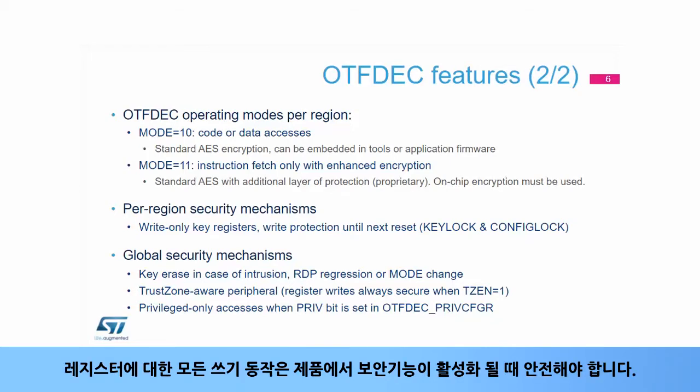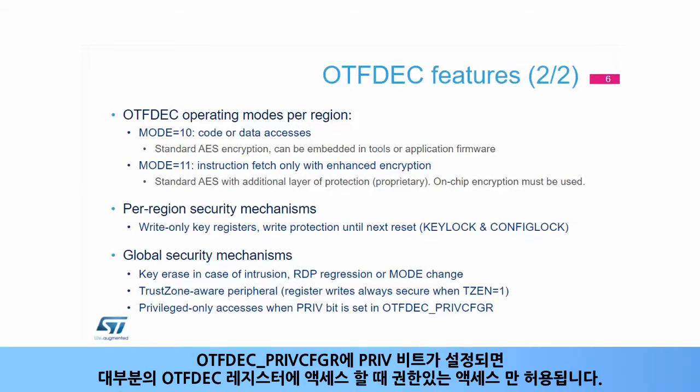OTF-DEC is a TrustZone-aware peripheral. All rights to its registers must be secure when security is activated in the product (when TZEN equals 1). When the Priv bit is set in OTF-DEC's PrivCFGR, only privileged accesses are granted when accessing most OTF-DEC registers.